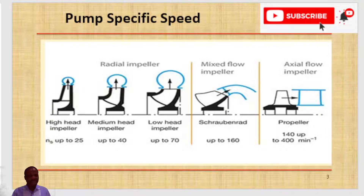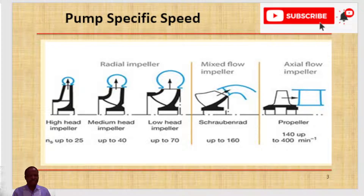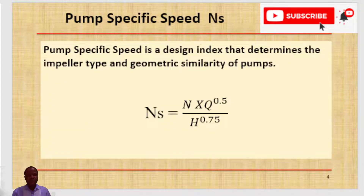When the pump specific speed is calculated and you find it being less than 70 in USC units, radial impellers are suitable for the application. When the pump specific speed is between 72 to 160, mixed flow impellers are suitable. Axial flow impellers are suitable for a pump specific speed from 140 and above.